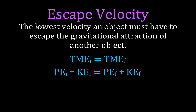It says here that it's the lowest velocity that an object must have. When the object is sitting on the surface of the Earth, we know it already has some potential energy, which we calculate as minus G times m1 times m2 divided by r — we'll talk about that in just a moment. So it already has some initial potential energy when sitting at the surface of the Earth. This says the lowest velocity — it's really the lowest initial velocity, and that's inside that kinetic energy, because kinetic energy is one-half mv squared. That initial velocity is actually the escape velocity — that's what we're going to be solving for.